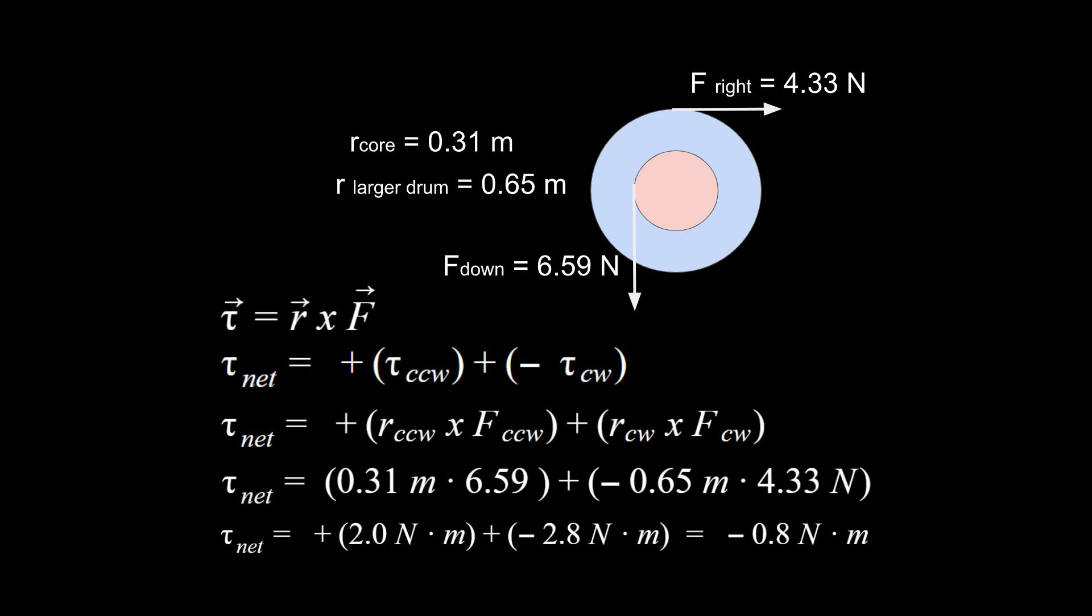A couple things to say about this answer. It's going to be negative. What that means is overall you're going to have a rotation that is going to be clockwise by our definition here. So you could look at this and say, wait a second, this is 4.33 newtons and this is 6.59 newtons. I would expect that we would have a counterclockwise rotation because this has a greater force.